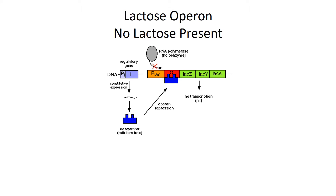This tiny teach is about the lactose, or lac operon. The lac operon is an example of an inducible operon, meaning that the structural genes are usually in the off position but they can be turned on if needed.